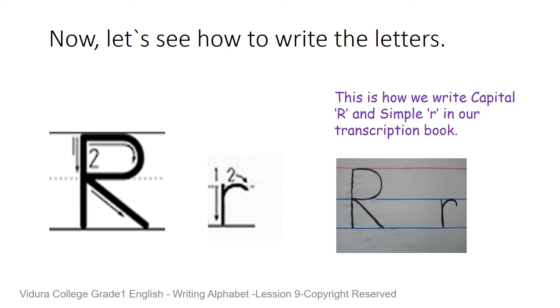We are going to do the simple R next. Keep a dot on your board. Draw a straight line down, come up in the straight line, take a small curve onto your right side and stop. This is the simple R. Is your simple R the same as the one on the screen? Then it's very good. The same way, you have to write the letters in your transcription books.